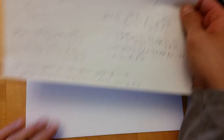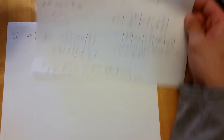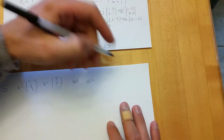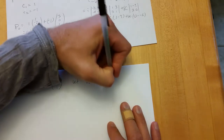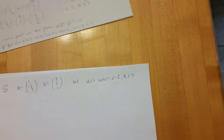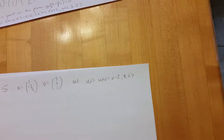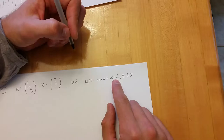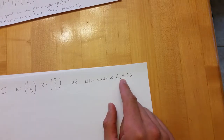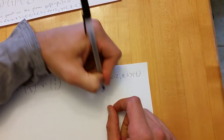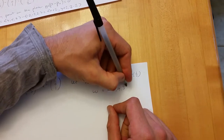So this is what we got when we crossed U and V to get the normal. You can scale your normal vector down much smaller — as small as you want. So I'm going to divide by 2, or multiply by a half. So we're really going to use W equals (-1, 4, 3).